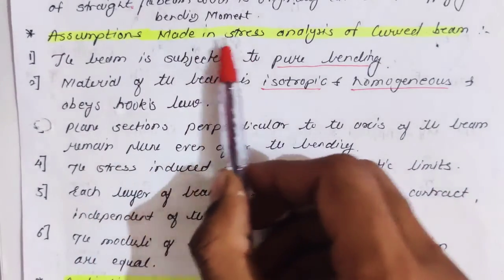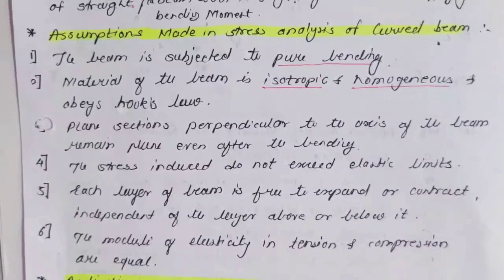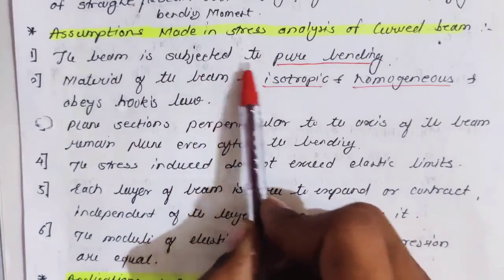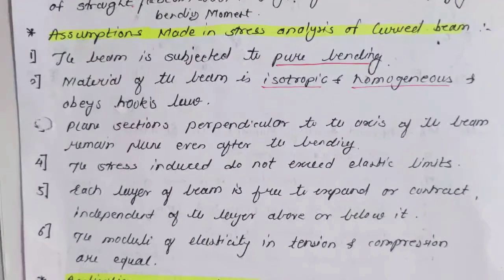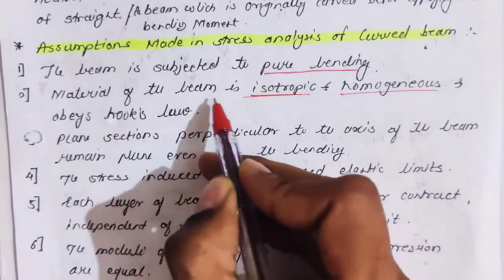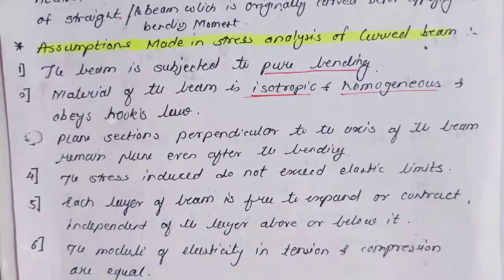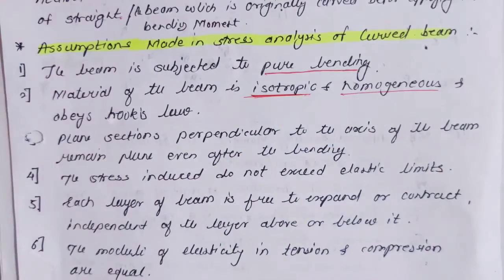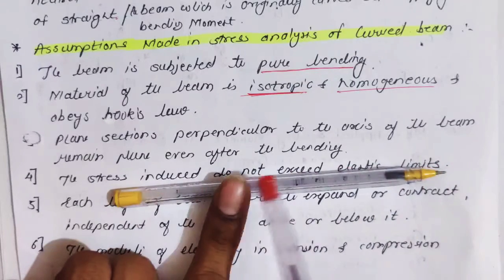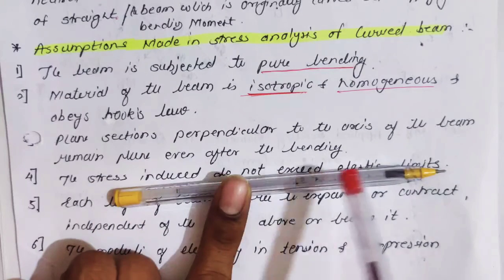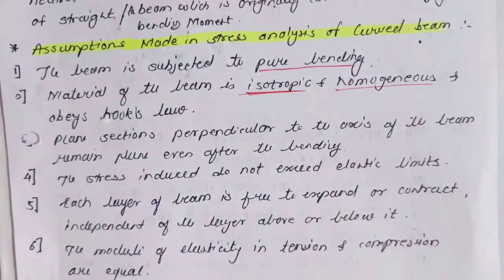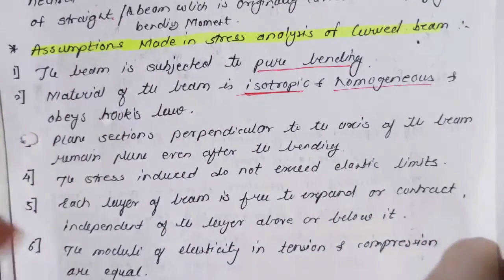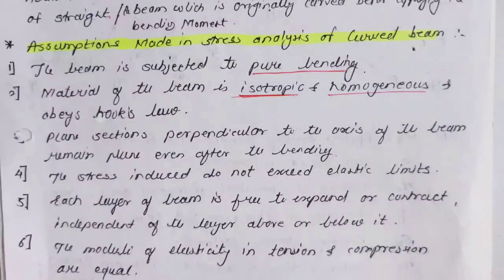Now we will see the assumptions made in the stress analysis of a curved beam. The first assumption is that the beam is subjected to pure bending, meaning there is no shear or torque — only bending. The second assumption is that the material of the beam is isotropic and homogeneous and obeys Hooke's law. Isotropic means the material has the same properties throughout; homogeneous means it has the same material throughout; and obeying Hooke's law means stress is directly proportional to strain, i.e., within the elastic limit.